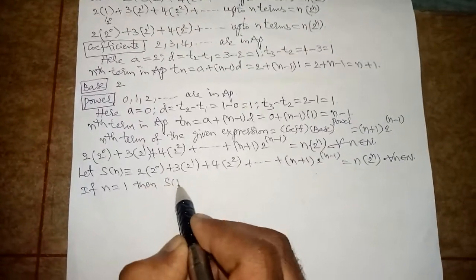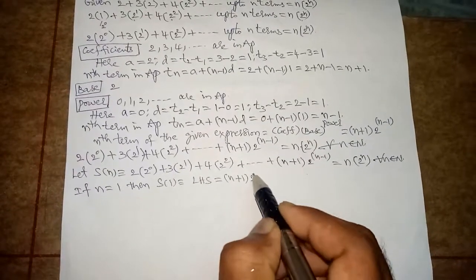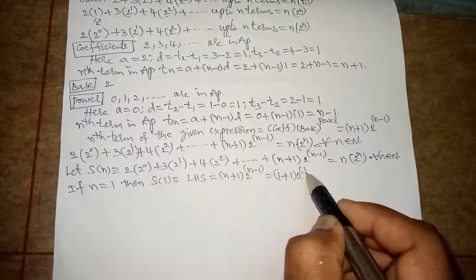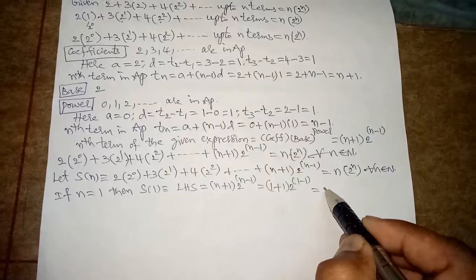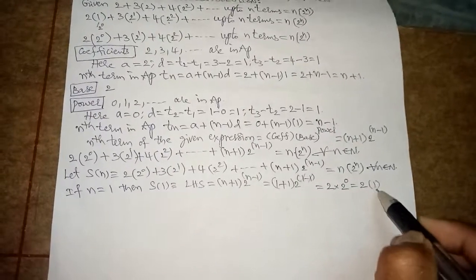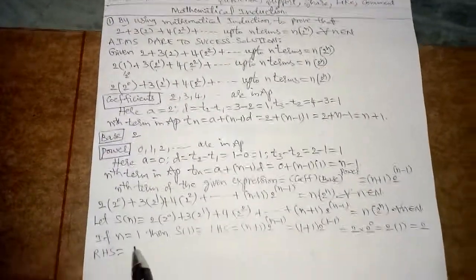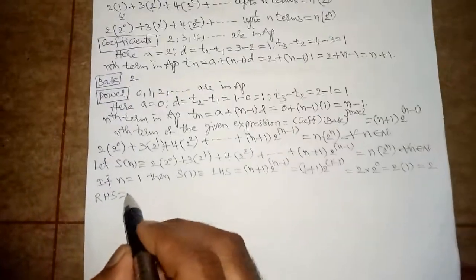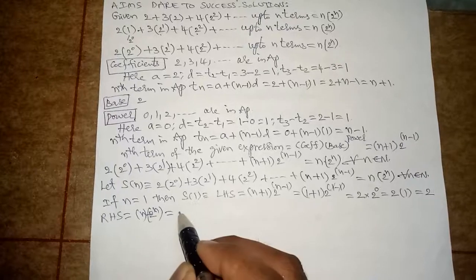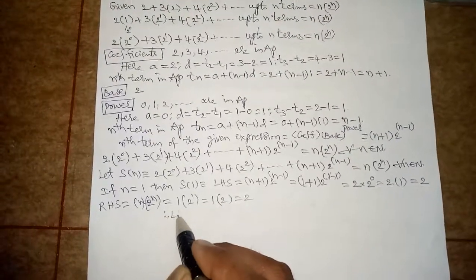Next step, if n equals 1, then S(n): the LHS is (1 plus 1) into 2 power (1 minus 1), which equals 2 into 2 power 0, equals 2 into 1, equals 2. Similarly, the RHS value is n into 2 power n, so with n equal to 1, that is 1 into 2 power 1, which equals 2. Therefore LHS equals RHS.